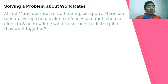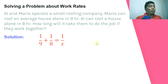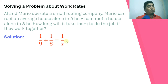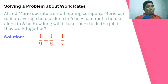Mario can roof an average house alone in nine hours; Al can do it in eight hours. If they work together, how long will it take to roof a house? Mario's rate is 1 job per 9 hours and Al's rate is 1 job per 8 hours. Working together combines their efforts, so we add the rates: one-ninth plus one-eighth equals one over x, where x is the time together.